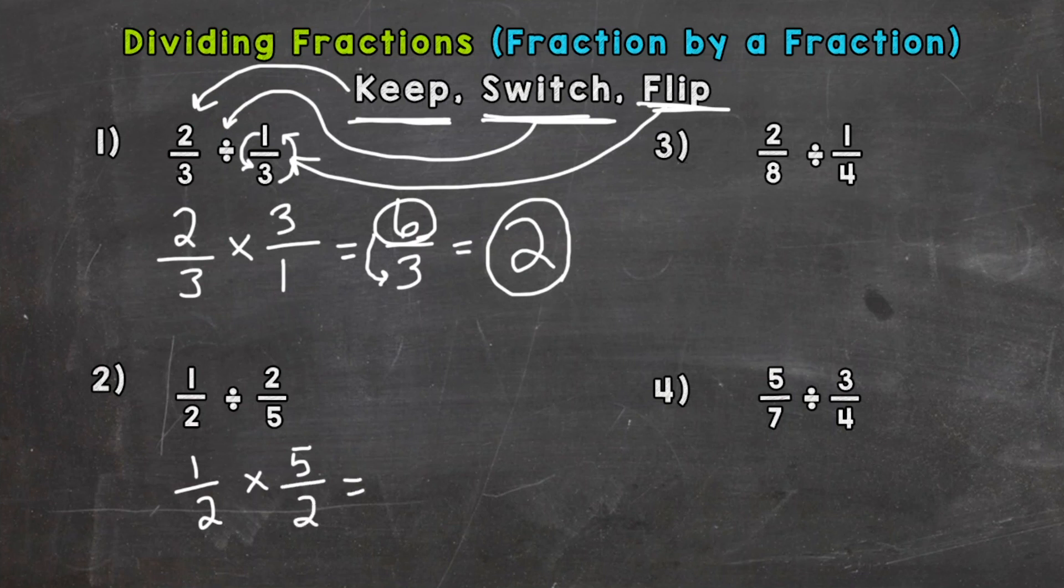Now we can multiply straight across. One times five is five. Two times two is four. So we ended up with an improper fraction again, so we need to convert it to a whole number or mixed number. So we need to divide the numerator by the denominator. Five divided by four. How many whole groups of four can be pulled out of five? And the answer to that is one. Now for this one we have something left over. If we pull a group of four out of five, we have one left over.